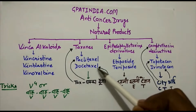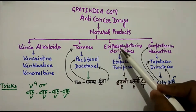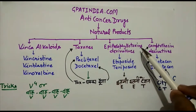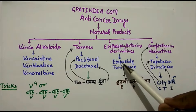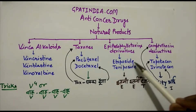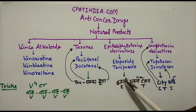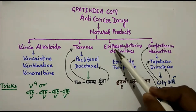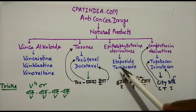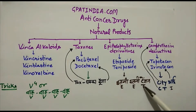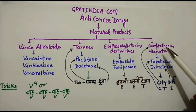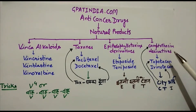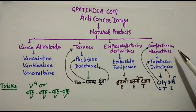The next category is epipodophyllotoxin derivatives. This category contains etoposide and teniposide. The second 'e' stands for etoposide, and 't' stands for teniposide.